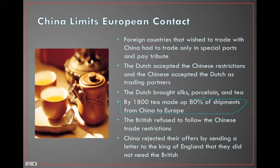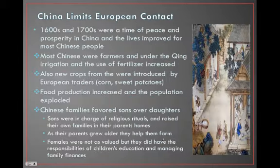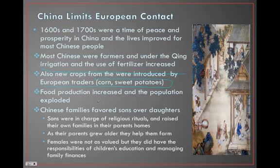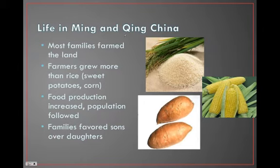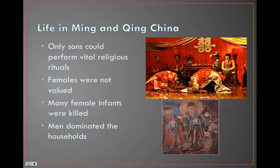By 1800, tea made up about 80% of the shipments from China to Europe. There's also a patriarchal society we see even today in China. Both the Qing and Ming dynasties were very agricultural and very patriarchal.